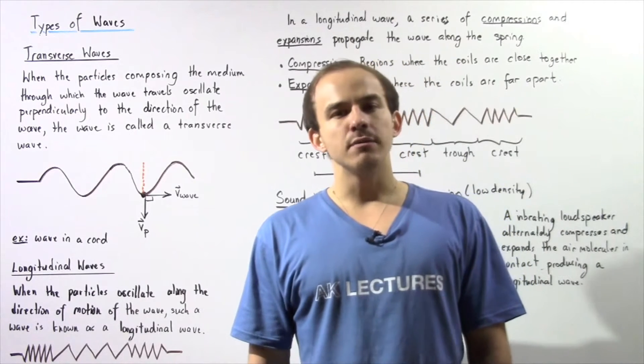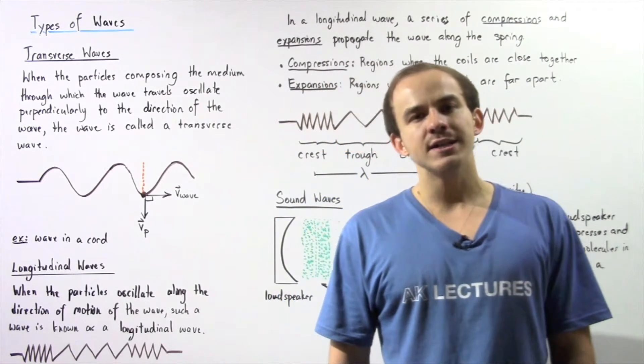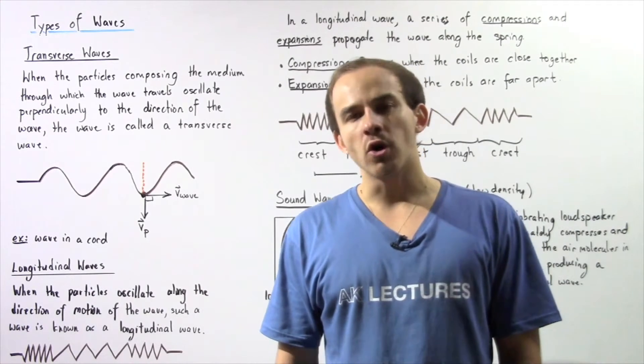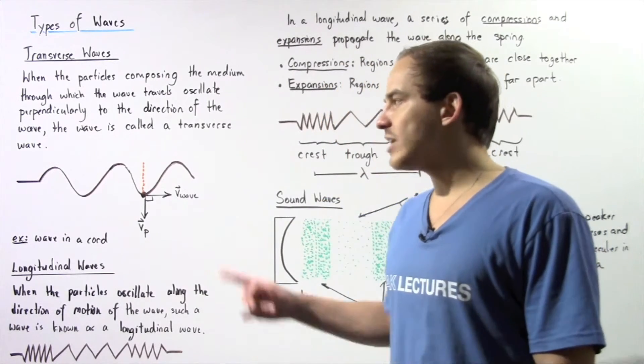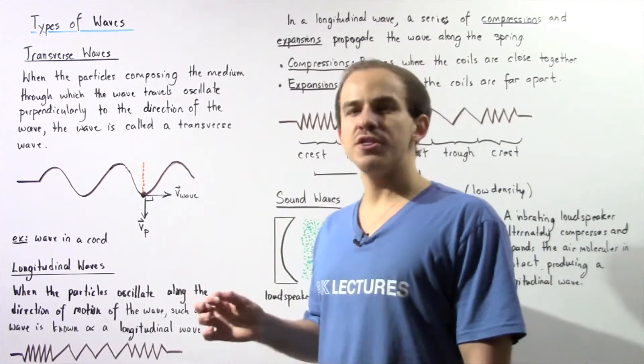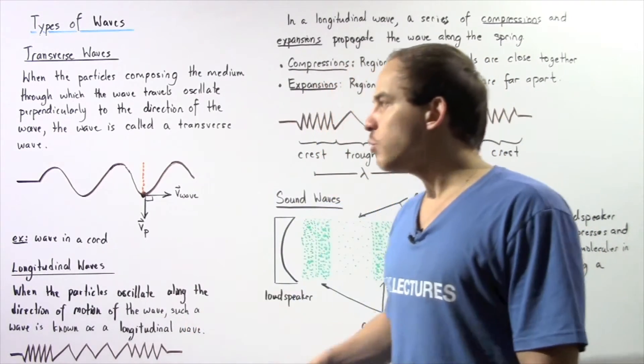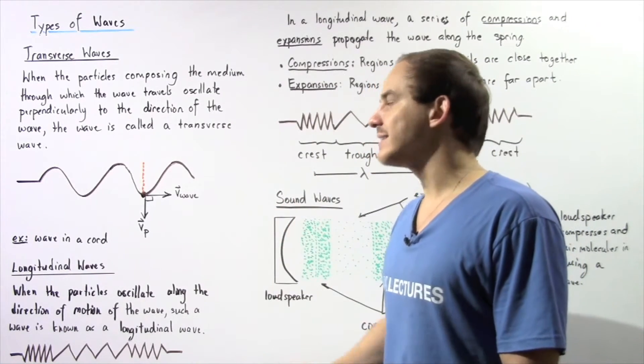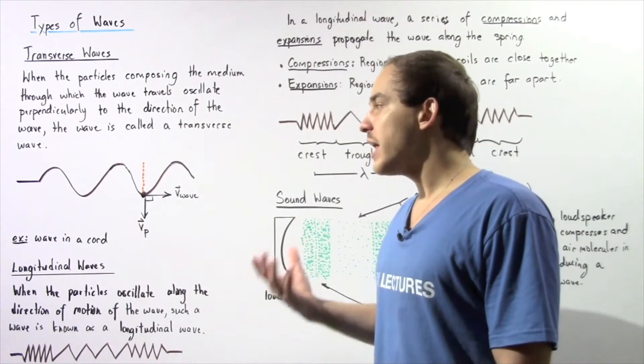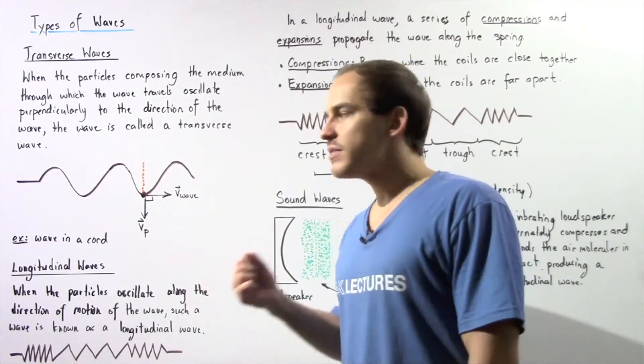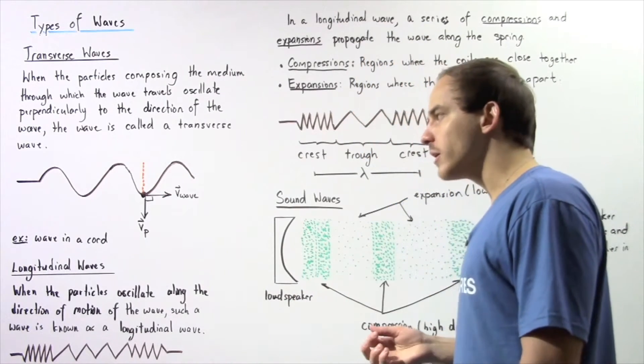One particular example of a transverse wave is a mechanical wave that is propagating through a chord. So let's suppose we take one end of our chord and we create an up and down motion with our hand. If we continue to move our hand with the same exact period, we'll create a wave, a mechanical wave that will take the following sinusoidal form.